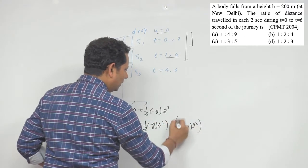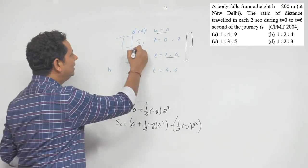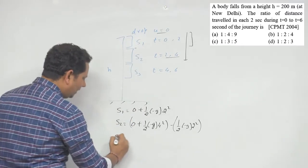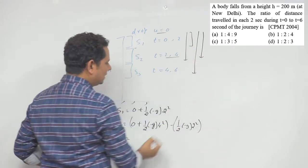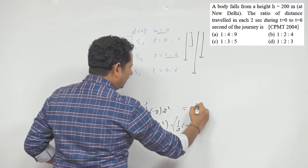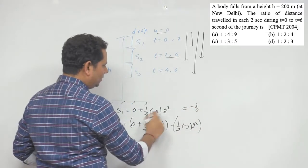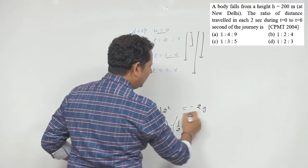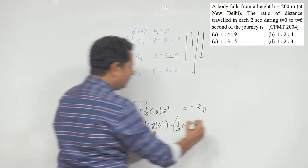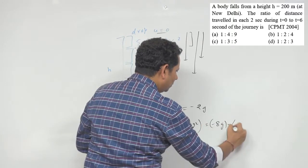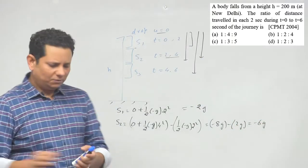After subtracting, the values simplify directly. Similarly, S3 is the total distance up to 6 seconds minus the distance up to 4 seconds. The value of S1 comes out to half G × 4, which gives 2G. S2 comes out to 8G minus 2G, which gives minus 6G — wait, it becomes minus 6G after subtraction.